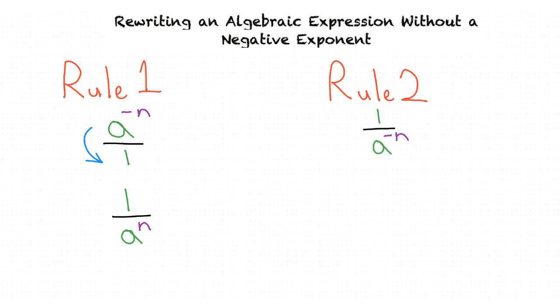The second rule deals with a negative exponent in the denominator. If we have 1 divided by a to the power of negative n, we would move our variable and exponent from the denominator to the numerator to make the exponent positive. This would get us a to the power of n.